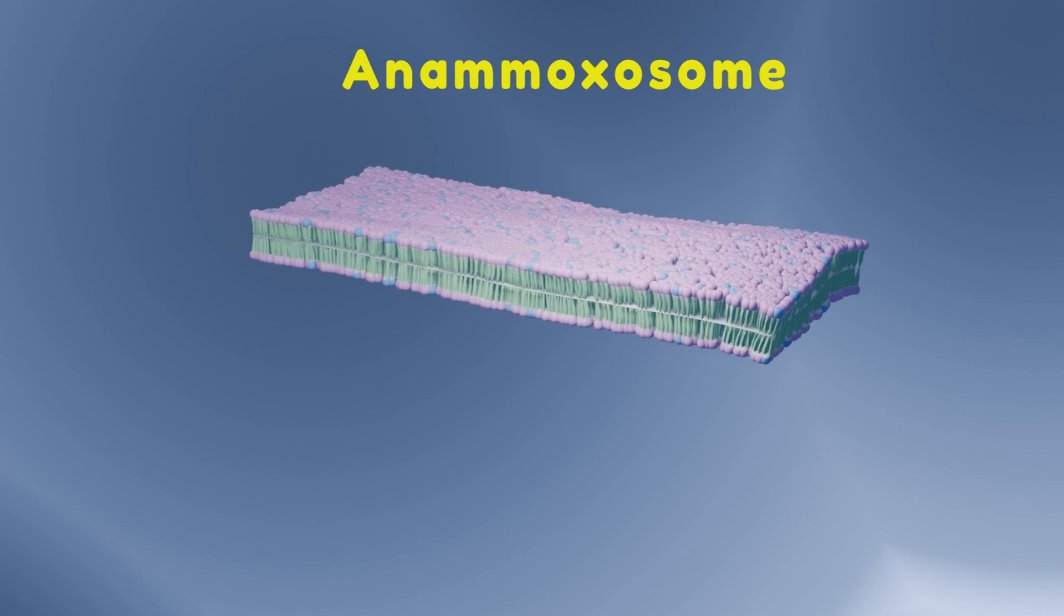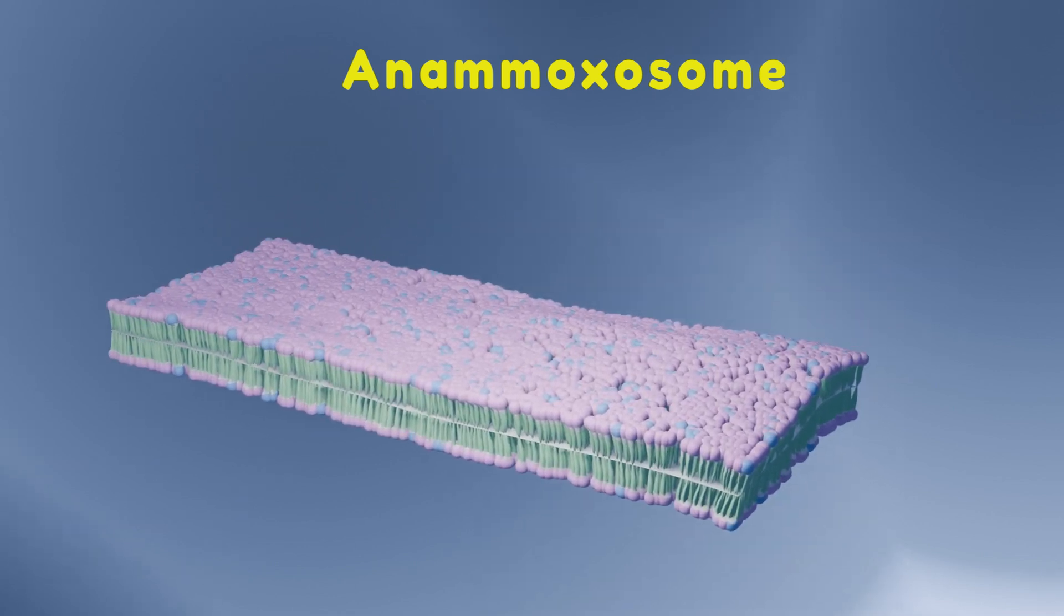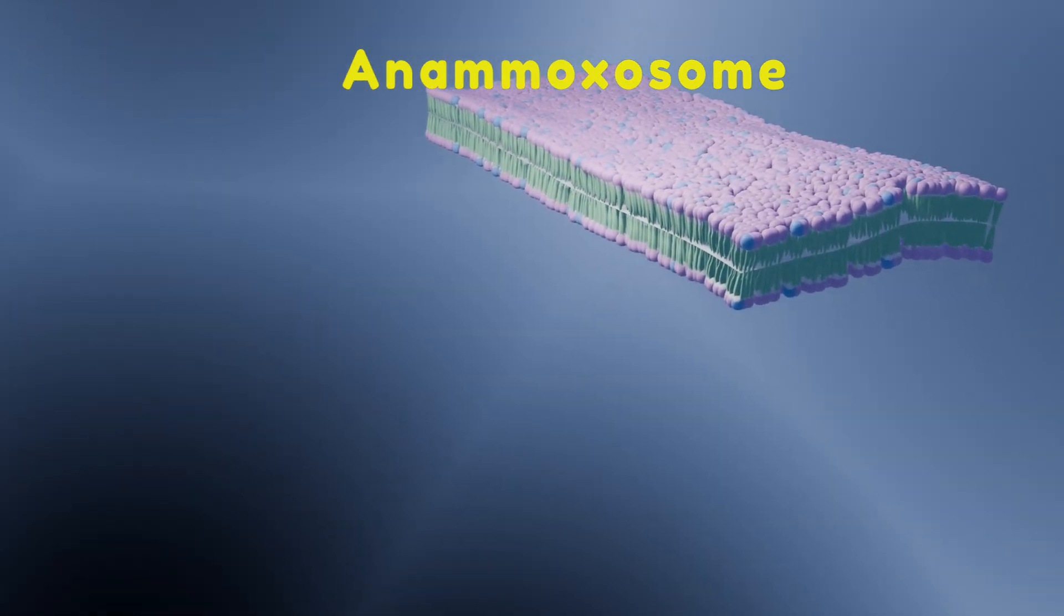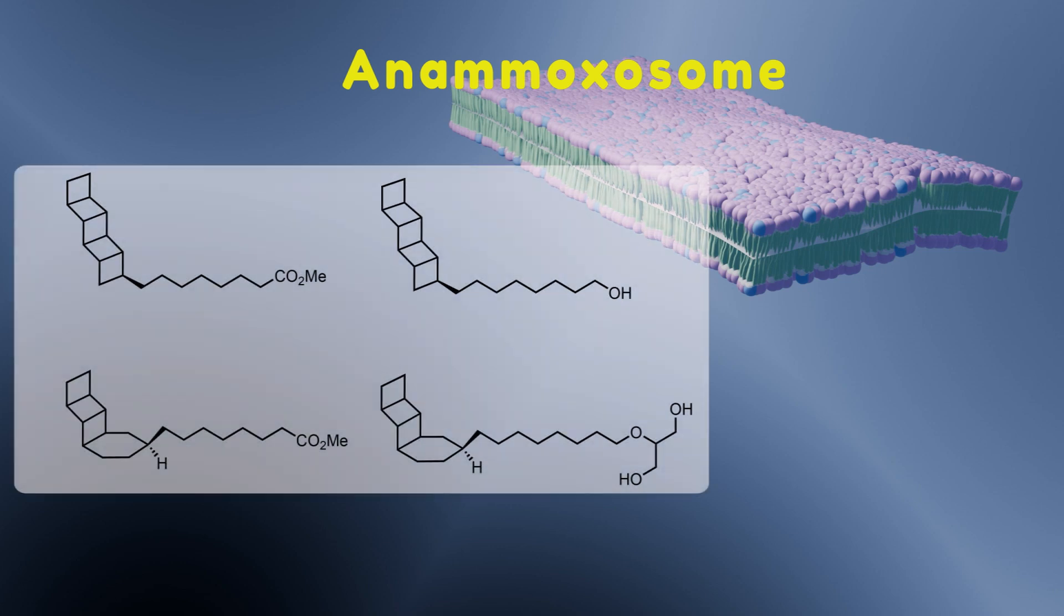This process takes place in the anammox bacteria. This species possess an anammoxosome, a lipid bilayer membrane in which the anammox process takes place. The anammoxosome membranes are rich in ladderane lipids which have a unique structure.